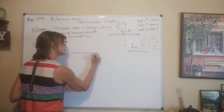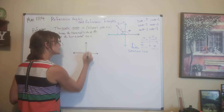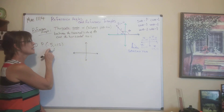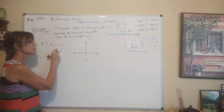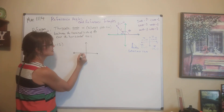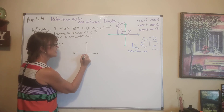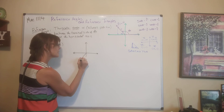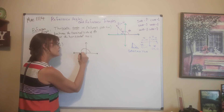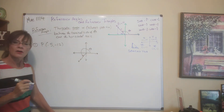Draw your xy-axis. Negative 5 and negative 12 means this is in quadrant 3. So go out negative 5 and down negative 12 — that's the point. The terminal side of angle theta goes out to that point.